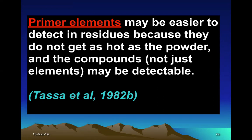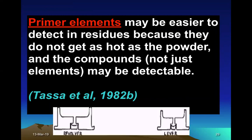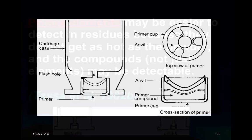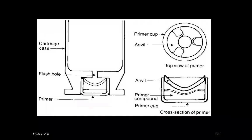Compounds — not just elements — can be detected. This diagram shows the base with the primer cap. The firing pin strikes the primer cap, the anvils are lifted, the primer burns, and through the flash holes the flame enters the main cartridge case where the gunpowder is located and ignites.